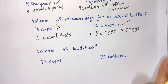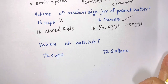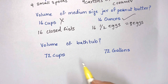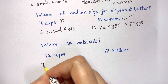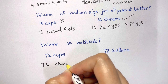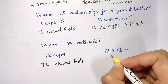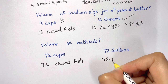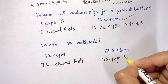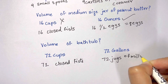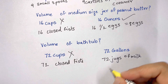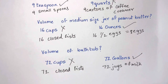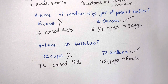What is the volume of a bathtub — 72 cups or 72 gallons? Seventy-two cups is 72 closed fists, while 72 gallons is 72 jugs of milk. The better estimate is 72 gallons. Hope this is helpful — don't forget to subscribe, thank you so much, bye bye!